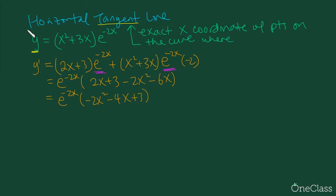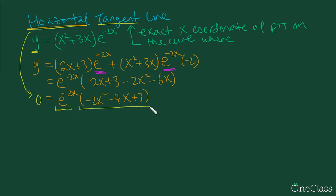A horizontal tangent line means the slope equals zero. We have two things multiplied together, so in order for the product to equal zero, one of them must be zero. The exponential function will never equal zero — this is where the asymptote comes in — so there is no x-value from that factor.